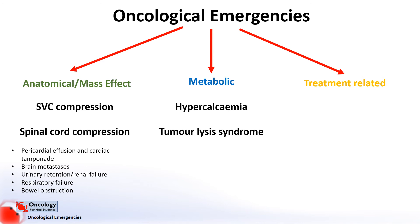Tumour lysis syndrome occurs when large numbers of tumour cells burst, also known as lysis, usually due to an effect of treatment, for instance chemotherapy. The cells release their contents, which includes a large concentration of potassium and uric acid, which can have lethal effects on the heart and kidneys.